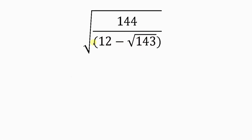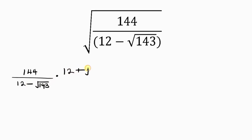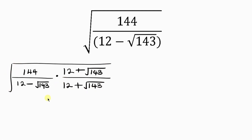Our first step will be to rationalize the denominator. We have 144 all over 12 minus the square root of 143. Rationalizing means we multiply by 12 plus the square root of 143, all over the same thing: 12 plus the square root of 143. All of this is embedded inside a square root.